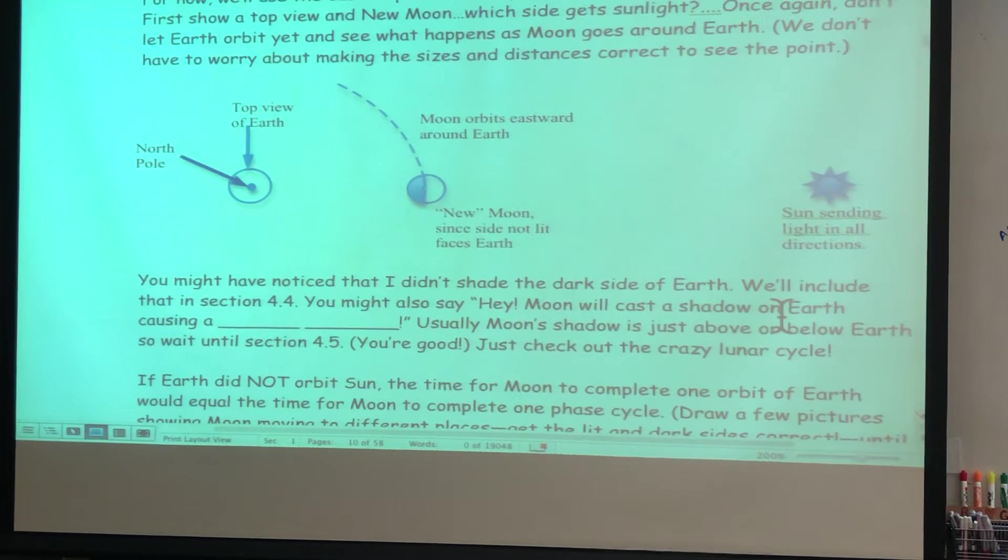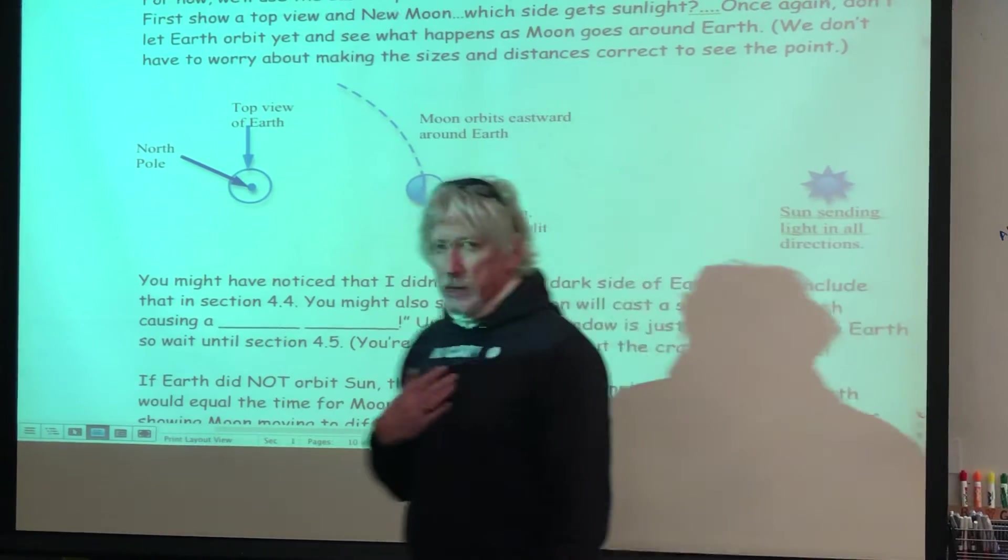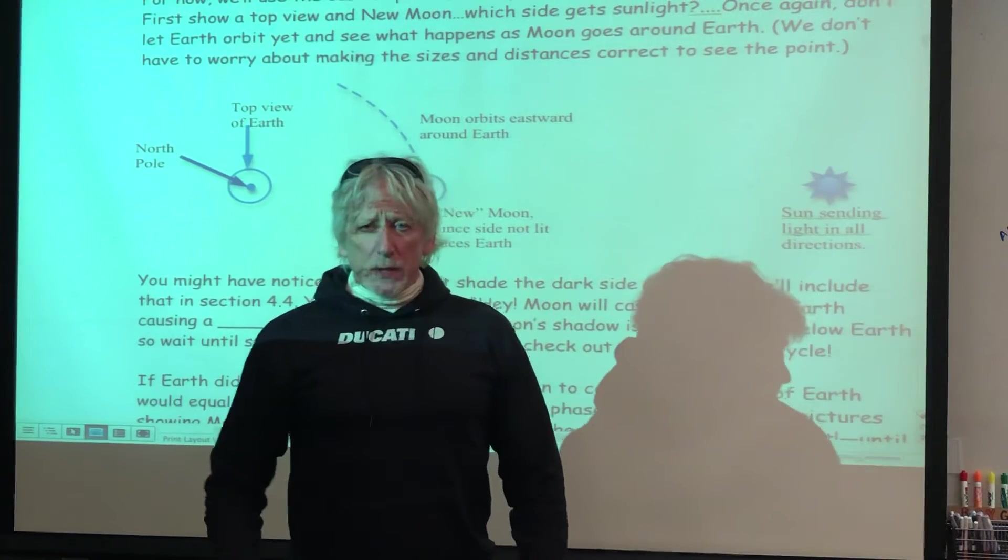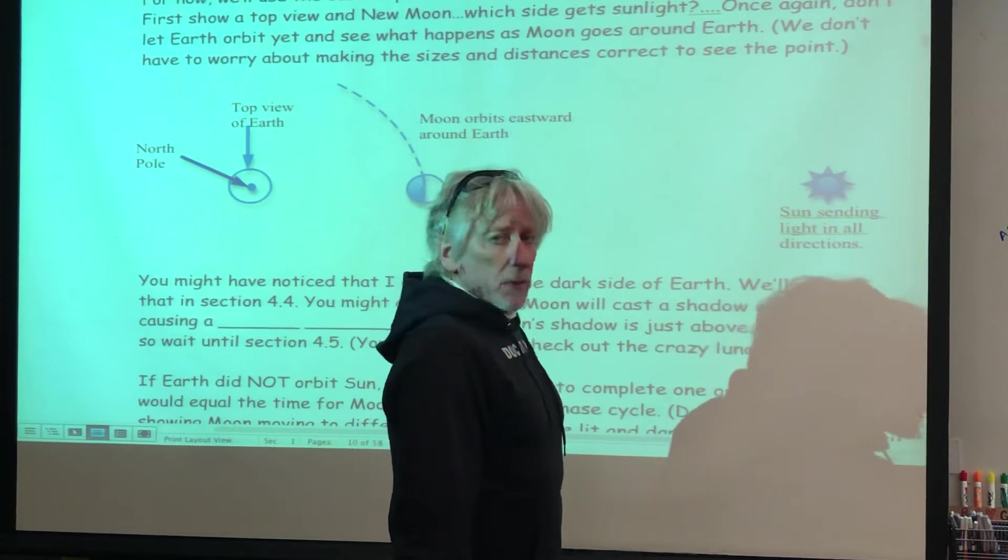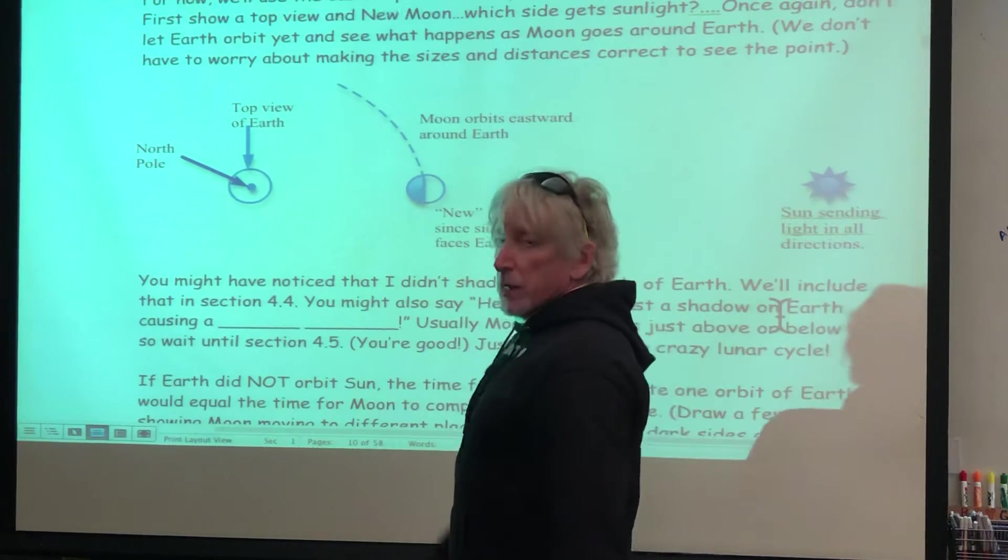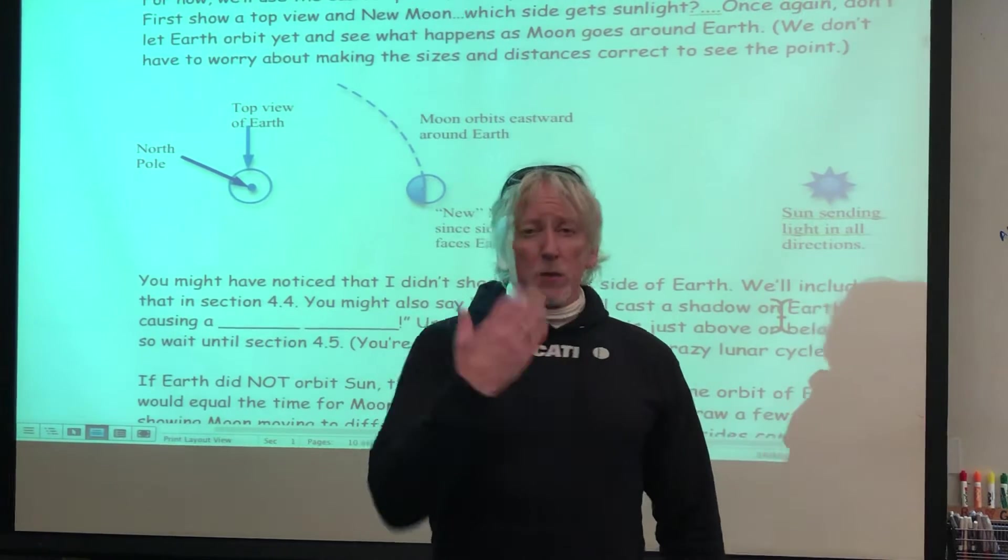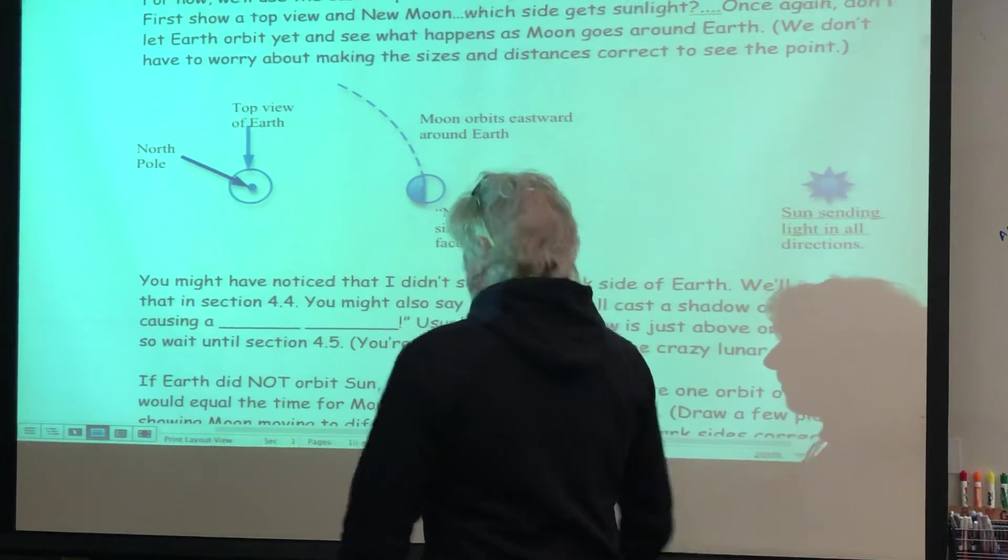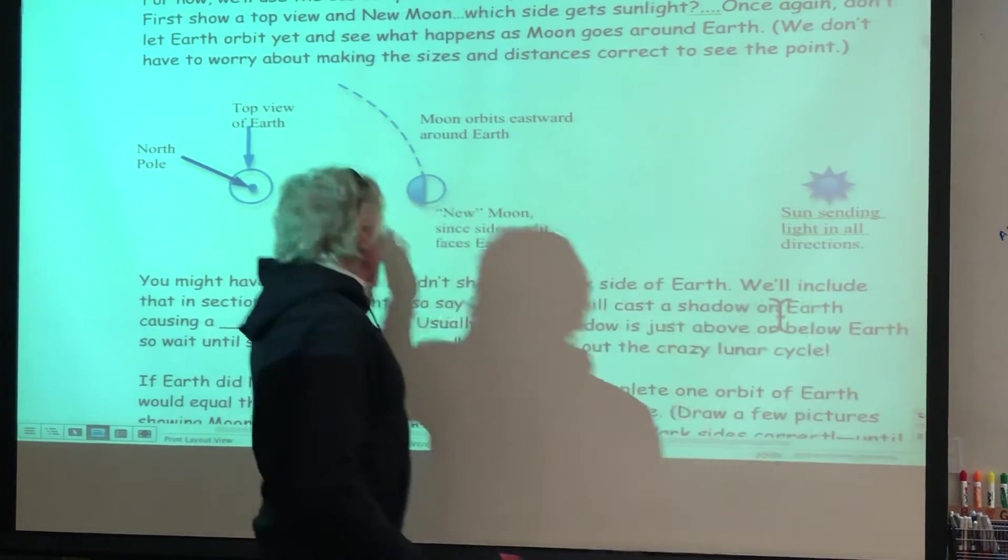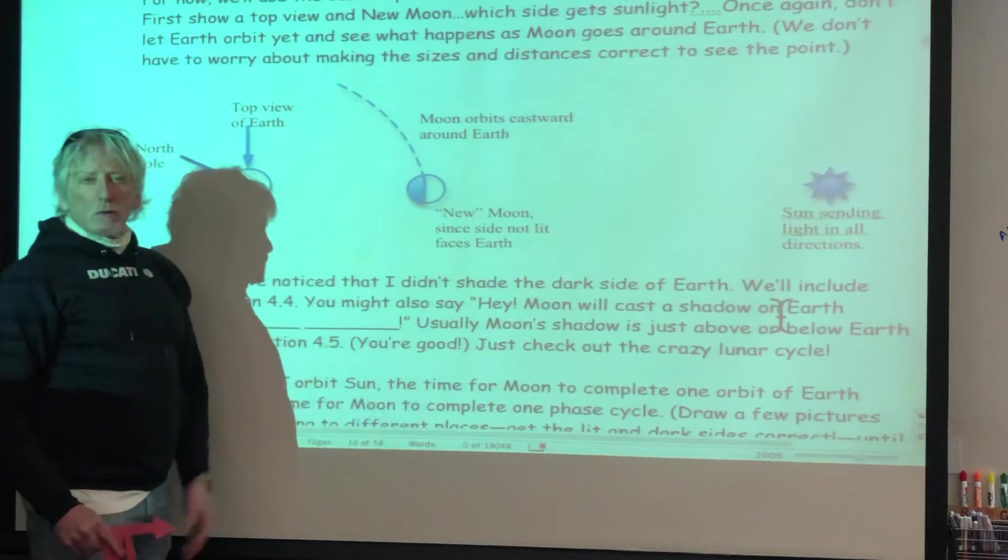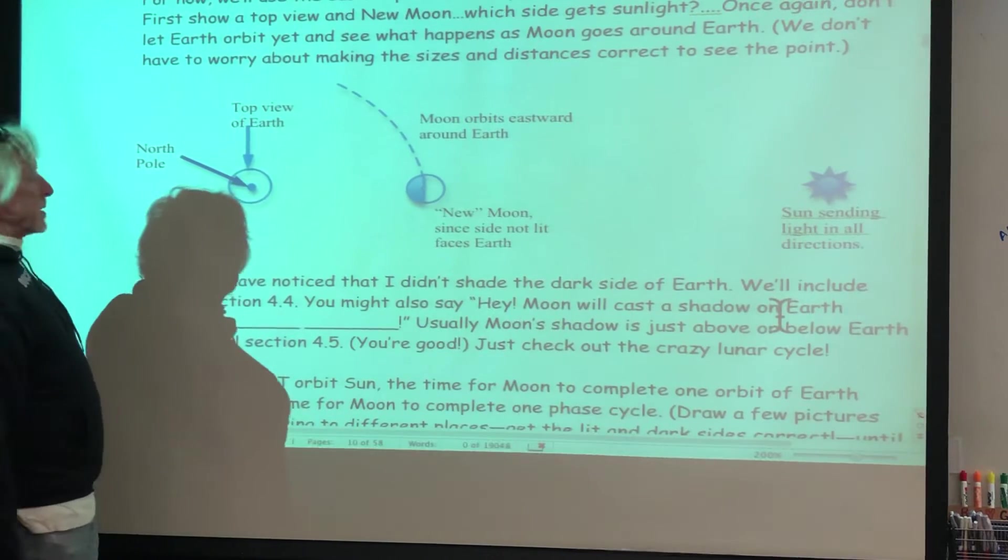The side facing Earth is the side close to Earth, always. The side facing you is the side close to you. Now it's my right shoulder. Now it's here. Now it's my left shoulder. So you see the side facing you. So too, from Earth, we see the side of moon facing us. We call it the near side.